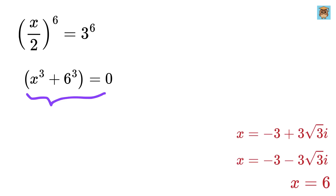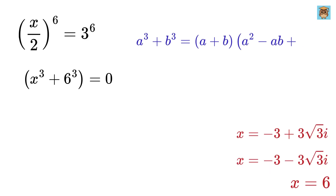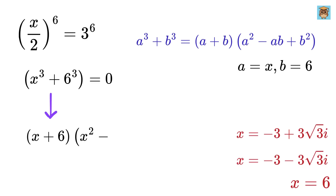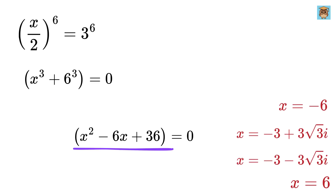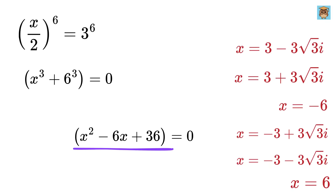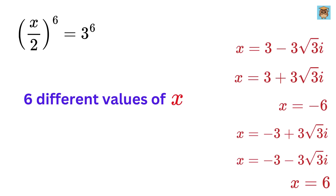Next we solve x cubed plus 6 cubed equals 0 using the sum of cubes formula, which states that a cubed plus b cubed equals a plus b multiplied by a squared minus ab plus b squared. Setting a as x and b as 6, we get x plus 6 multiplied by x squared minus 6x plus 36 equals 0. The first term x plus 6 gives the solution x equals minus 6. Solving the quadratic, we find the roots as 3 plus 3√3·i and 3 minus 3√3·i. Thus the six solutions to the given equation are x equals all of these values.